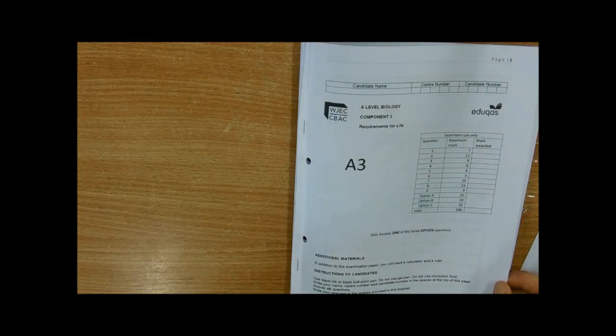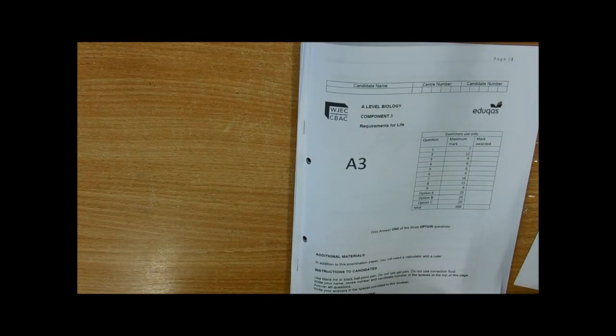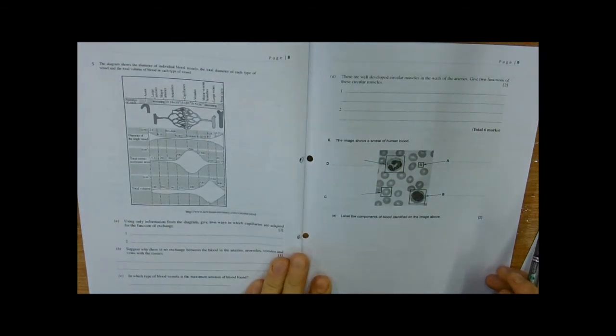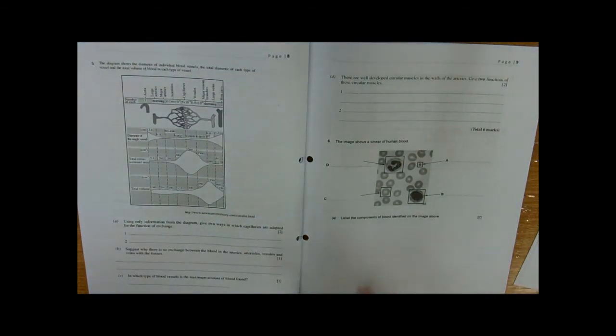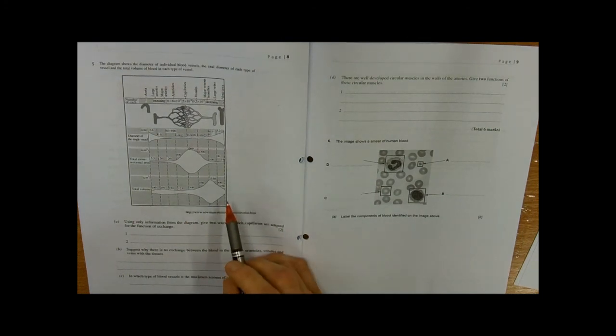This is Component 3 mark and this is Paper 3. We've got a great diagram here. You might not be able to see it too well, but you'll have your paper in front of you showing diameter, total diameter, total volume, and all sorts of other stuff.